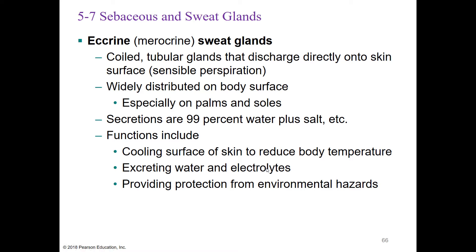The other type of sweat gland is the eccrine or merocrine sweat gland—coiled glands that discharge directly onto the skin, which we call sensible perspiration. These are not smelly like apocrine glands. They are widely distributed, especially on the palms of the hands and soles of the feet. The secretions are 99% water plus salt. Their function is to cool the skin and reduce body temperature, excrete water and electrolytes, and protect from environmental hazards by diluting toxins on the skin.